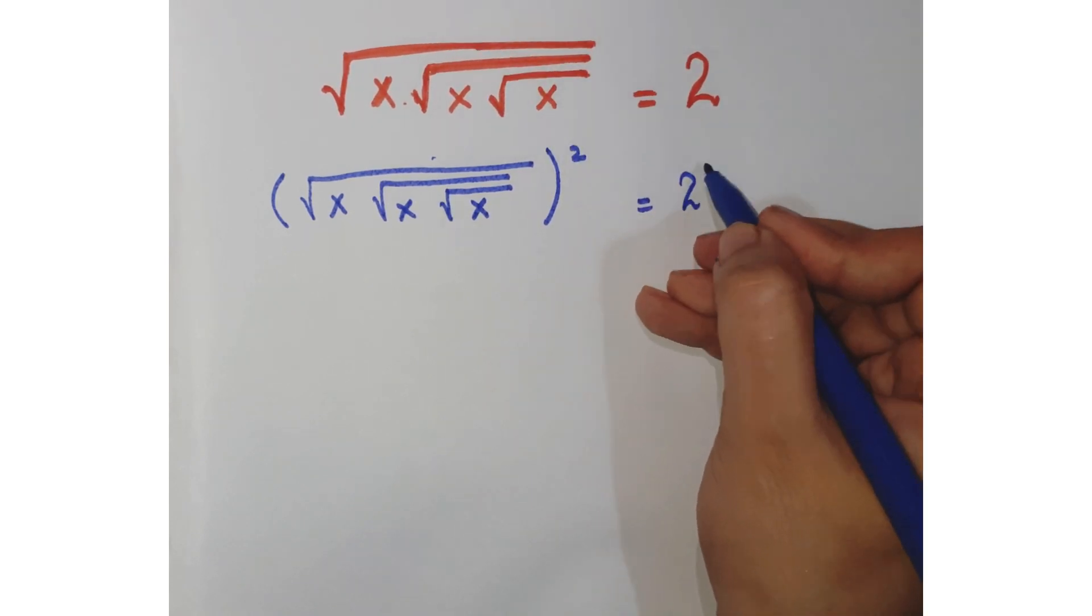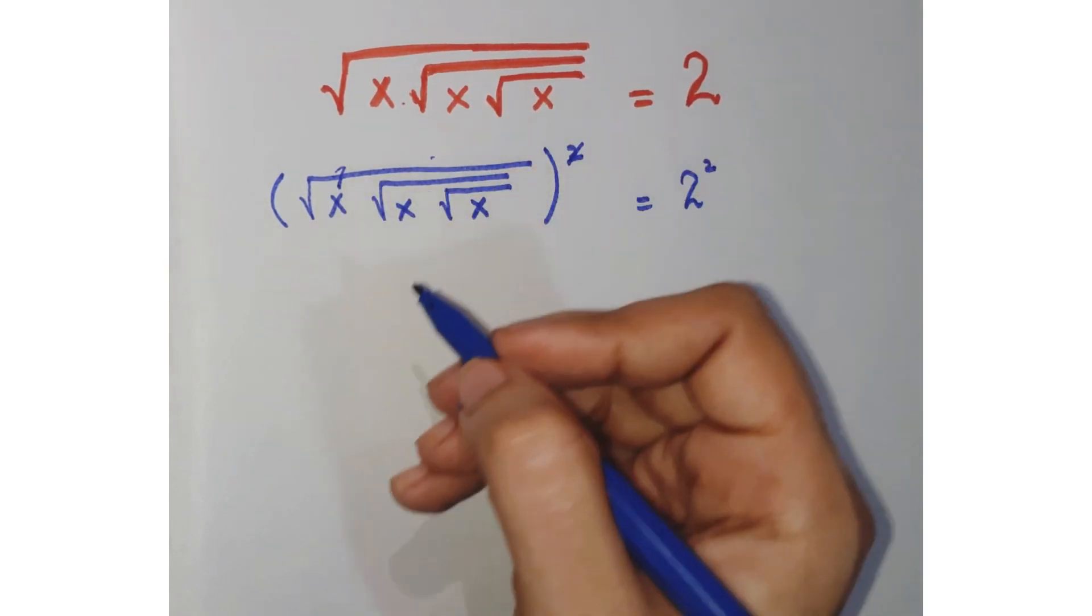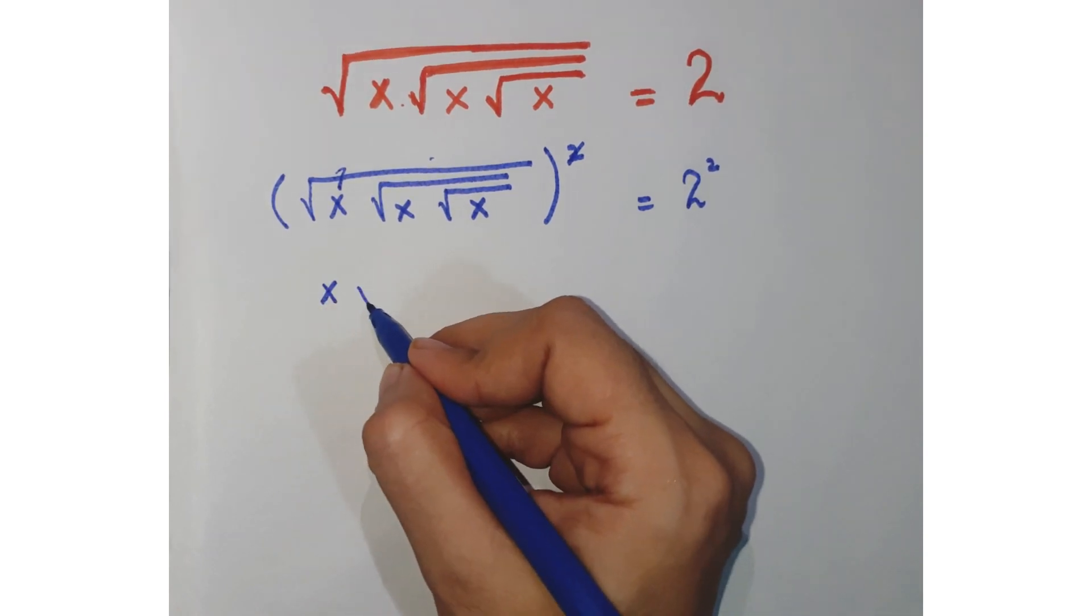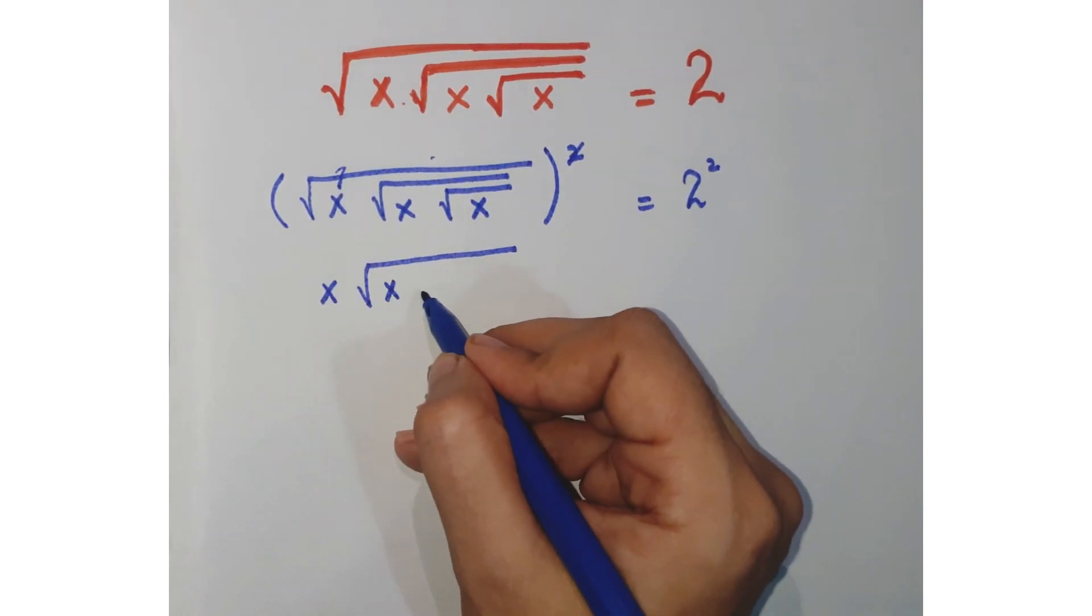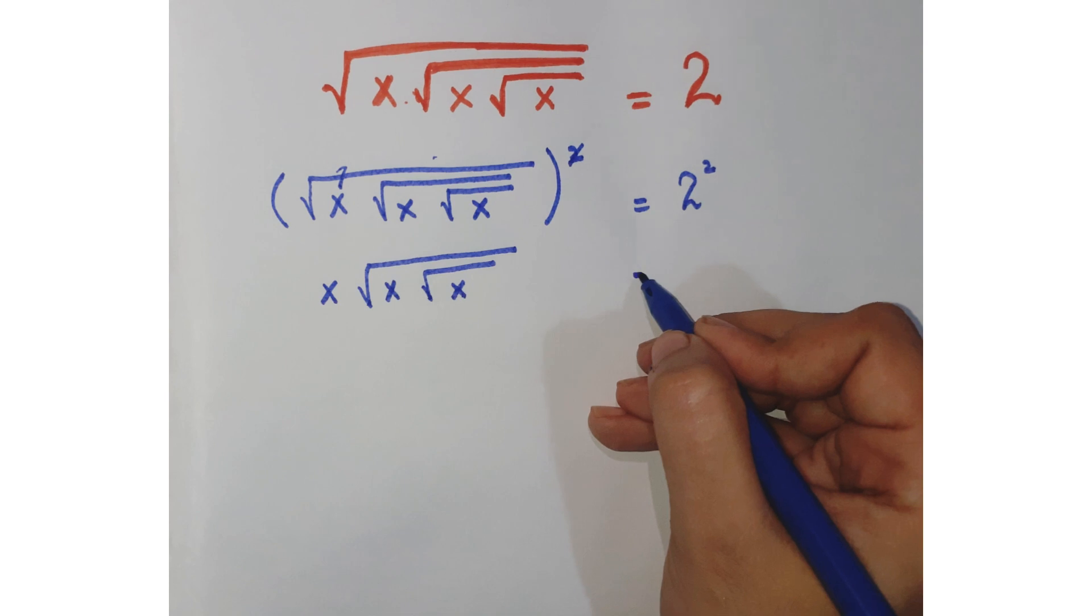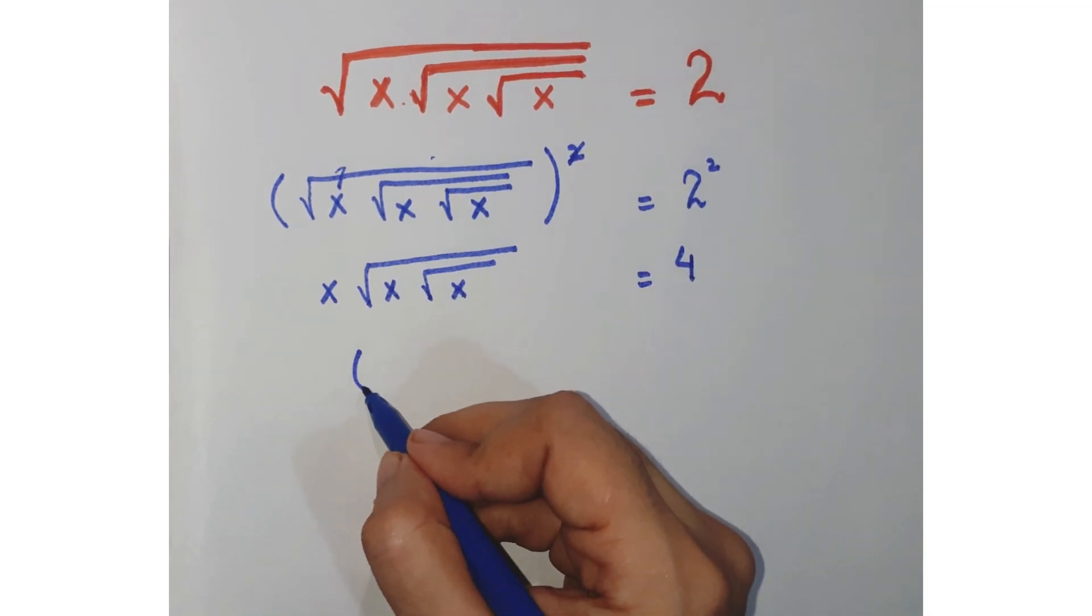What we will get is the square cancelled with this under root, so you're left with x√(x√x) = 4. Again, square both sides.